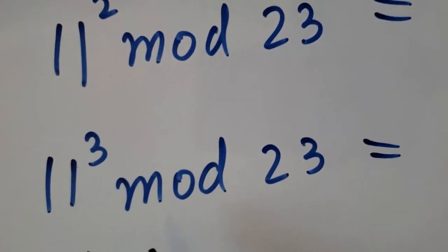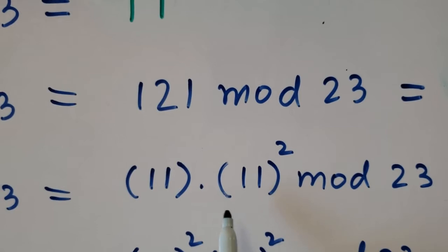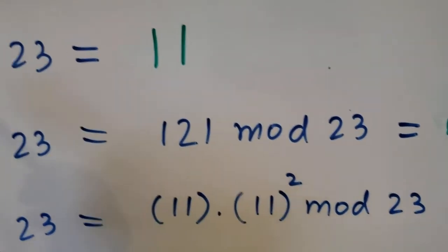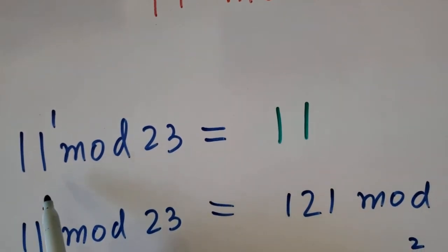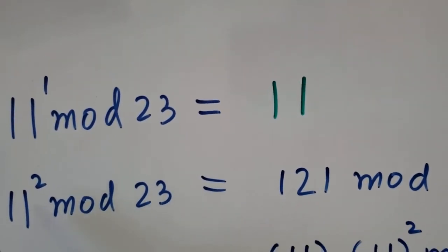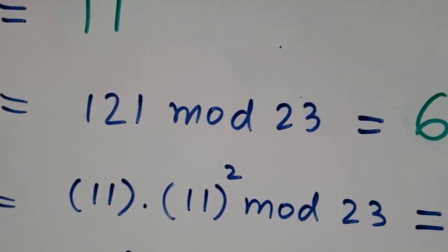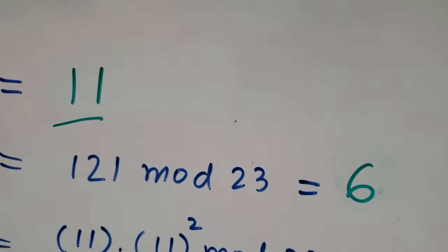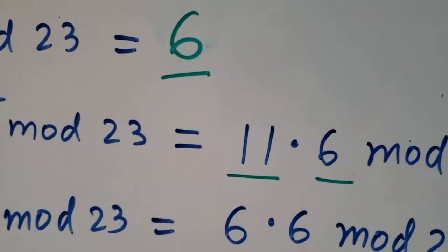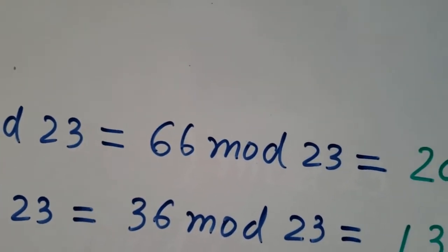11 cubed mod 23 is the combination of 11 times 11 squared mod 23. We already calculated 11 to the power 1 mod 23 which is 11, and 11 squared mod 23 which is 6. So we take the value 11 from here and 6 from here. 11 times 6 is 66, and 66 mod 23 is 20.